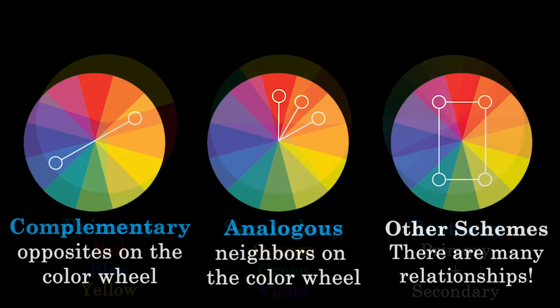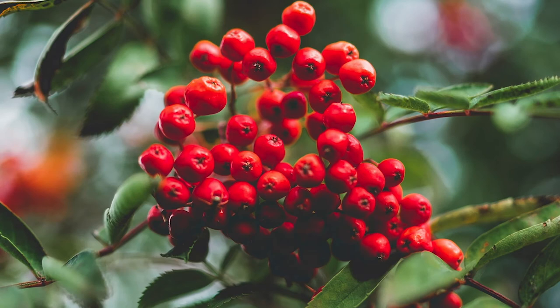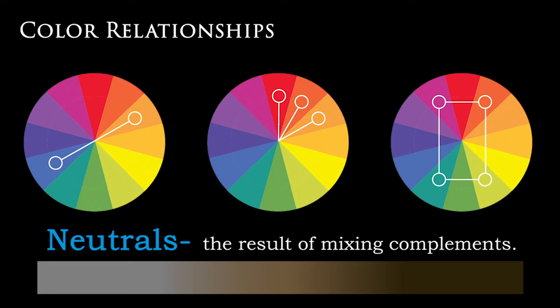Complementary colors are the opposites on a color wheel. The opposite of red is green, the opposite of blue is orange, and the opposite of violet is yellow. Laying two complementary colors side by side will actually make each other appear brighter. However, when you mix complementary colors, the result is neutralizing — mixing complementary colors creates neutrals or browns.